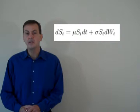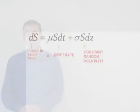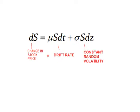Here is a formula for a geometric Brownian motion applied to a stock price. Don't be intimidated by the math. In simple language, it says that the change in the price of the stock equals a constant rate over time called the drift rate, plus the volatility caused by constant random buying and selling.